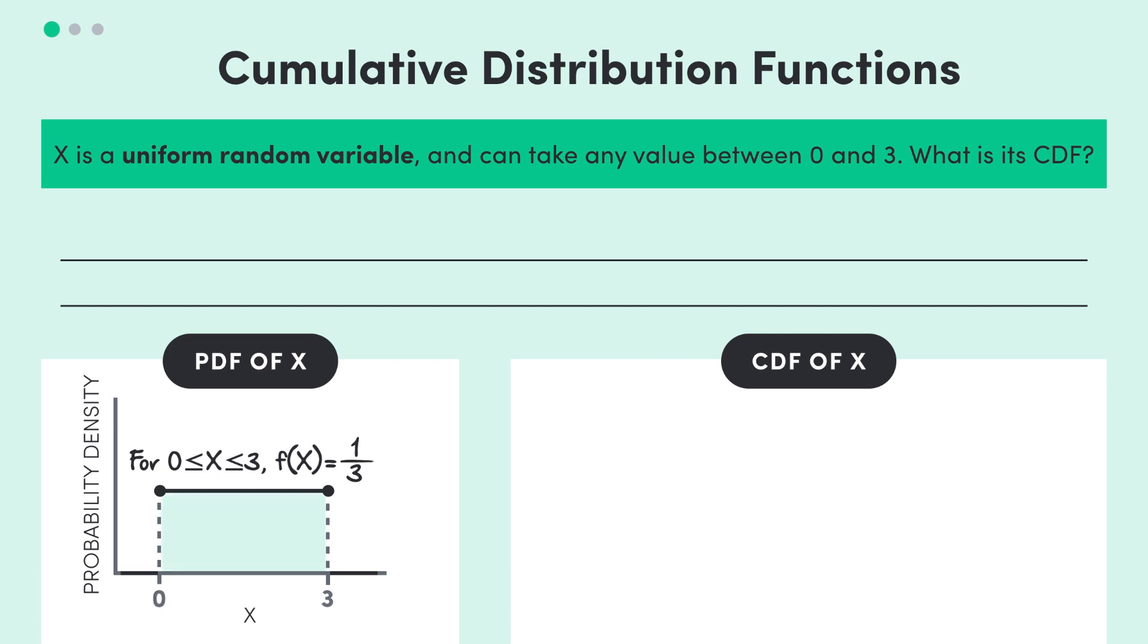The CDF is the area under the PDF between 0 and x, as x moves to the right. So basically, it's the integral from 0 to x of our PDF. And we know in this case the PDF is 1 over 3. So the integration is pretty easy to do, as we can see, it's x over 3.